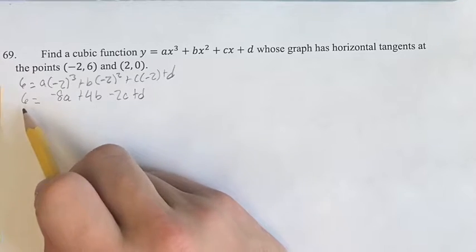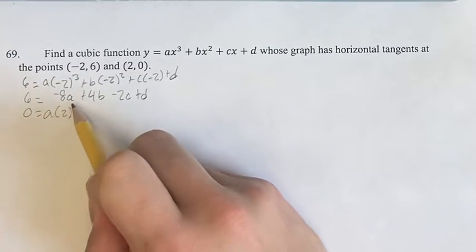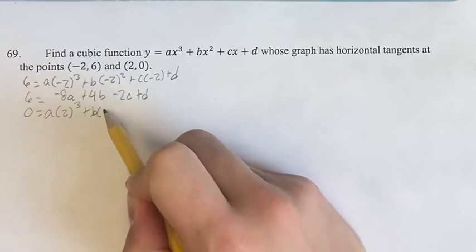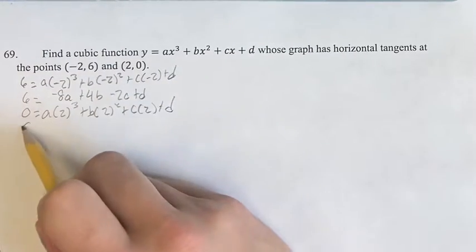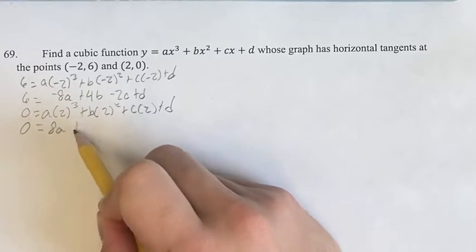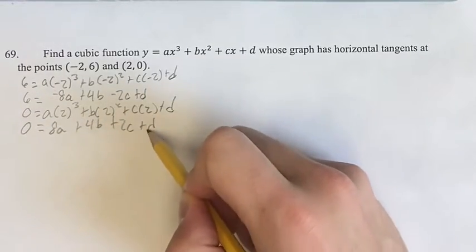Over here on the other one we get 0 equals a times 2 cubed plus b times 2 squared plus c times 2 plus d, which gives us 0 equals 8a plus 4b plus 2c plus d.